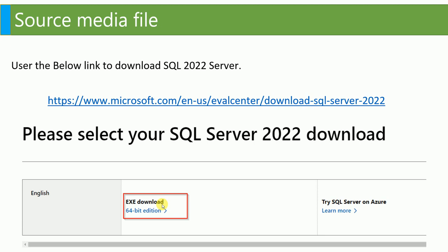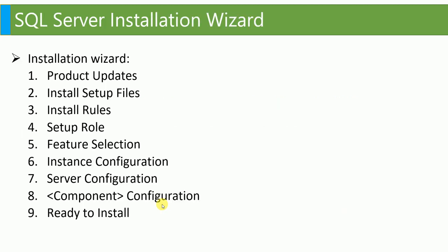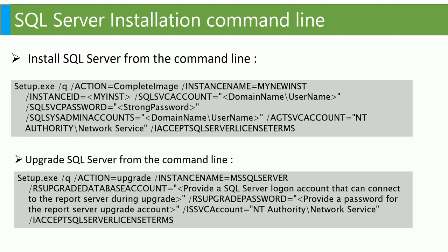I will show you how the installation wizard works in the lab and what things are needed to install SQL Server. If you want to install SQL Server with the command line, you can use this command — just change a few settings like the action, instance name, and instance ID, and define the account. This is useful if you want a silent installation without running the wizard. There is also a command for upgrade.